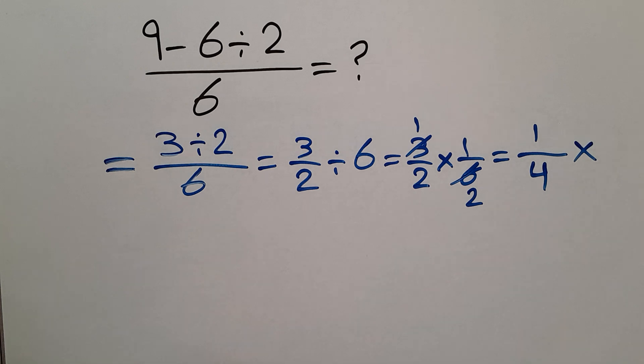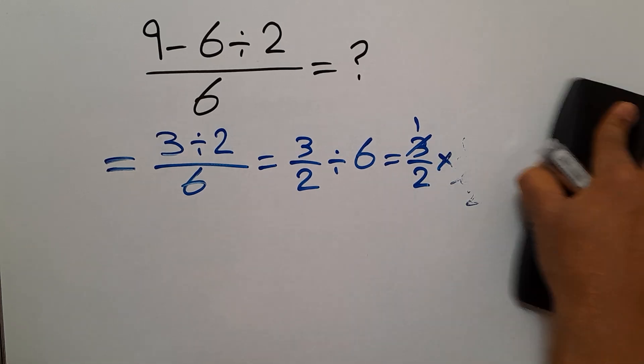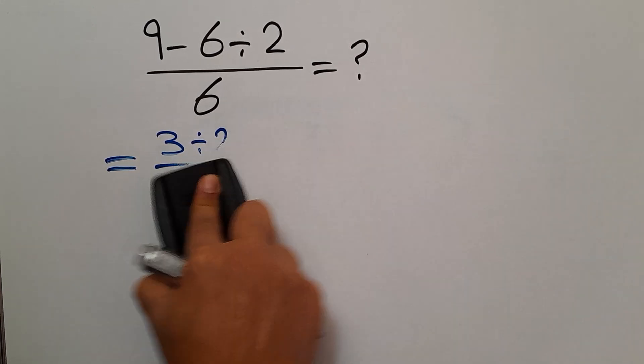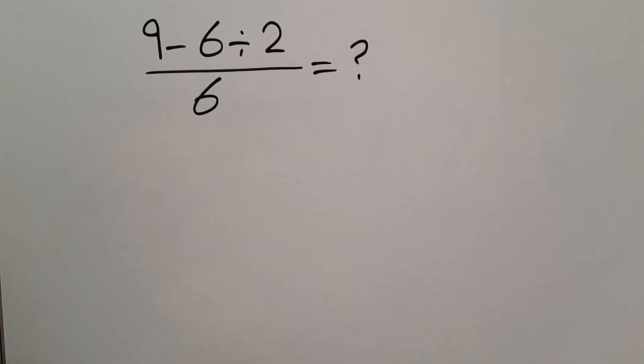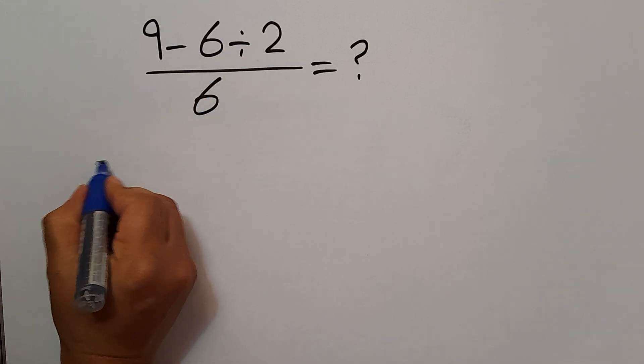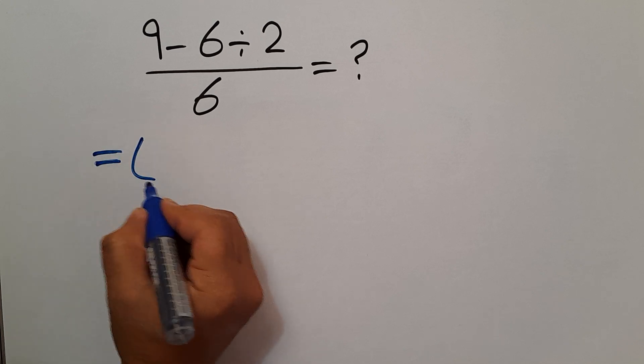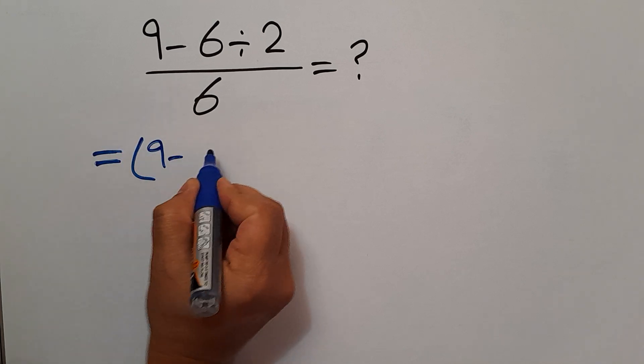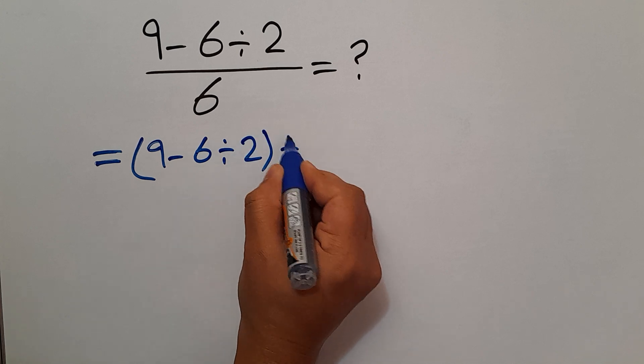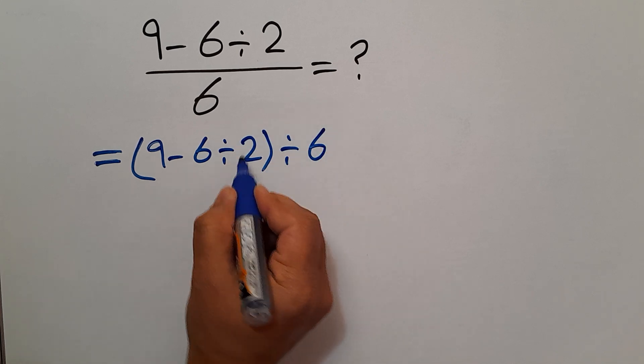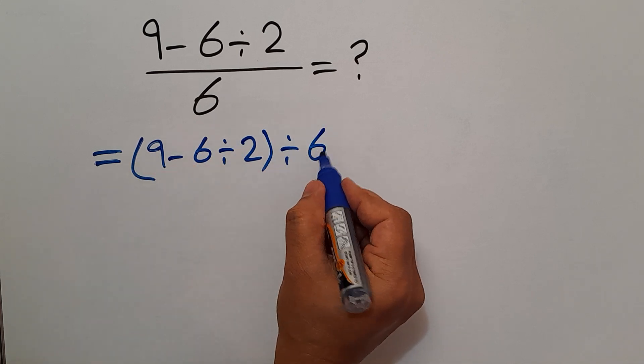But this answer is not correct. No, our correct path. This fraction can be written as parentheses 9 minus 6 divided by 2 then divided by 6. The numerator divided by denominator.